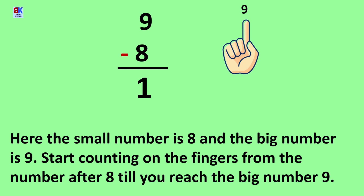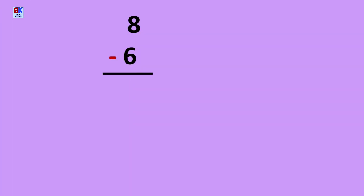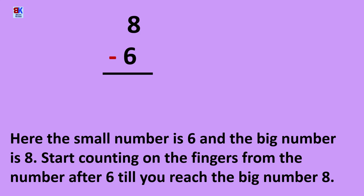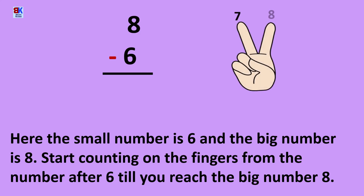The answer is 1. Did you get it correct? 8 minus 6. Here the small number is 6 and the big number is 8. Start counting on the fingers from the number after 6, which is 7, till you reach the big number 8. 7 and 8. We require 2 fingers for that, so the answer of 8 minus 6 would be 2. Did you get this also correct?